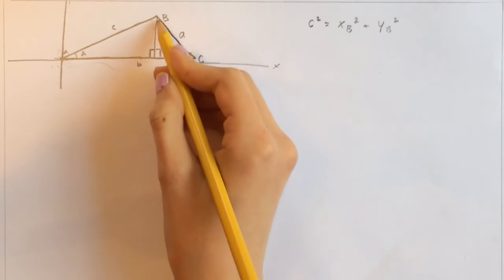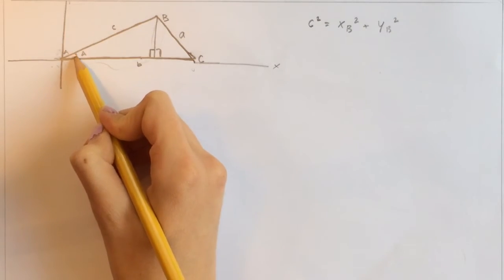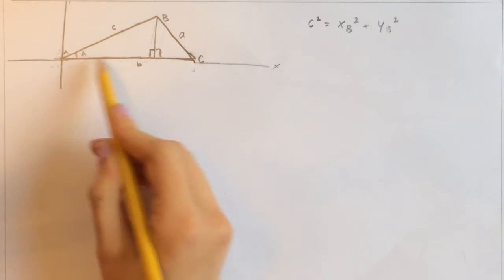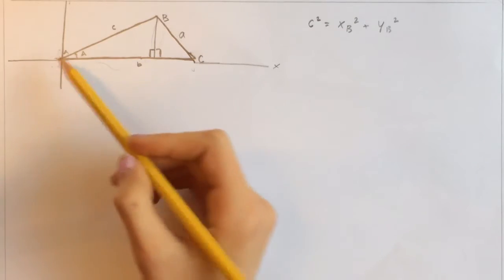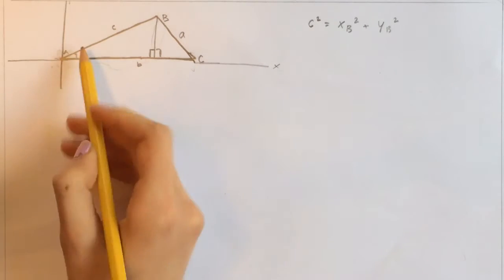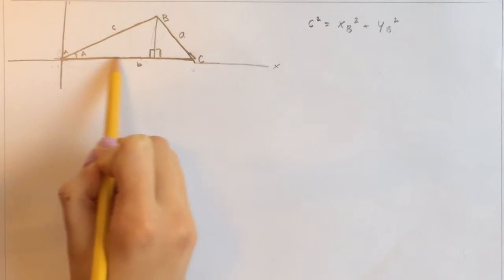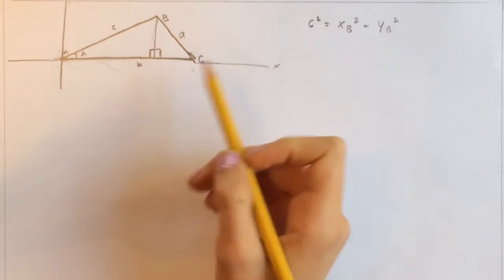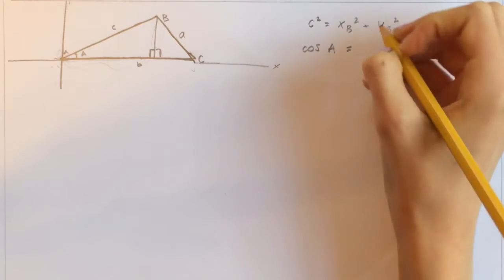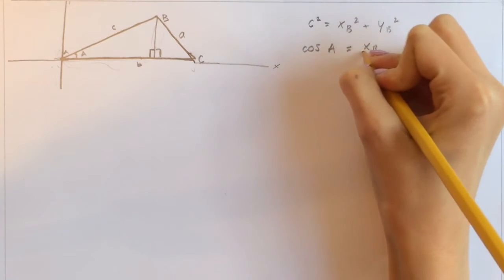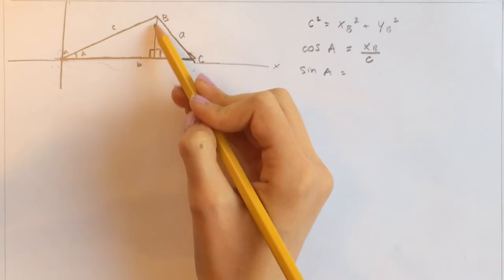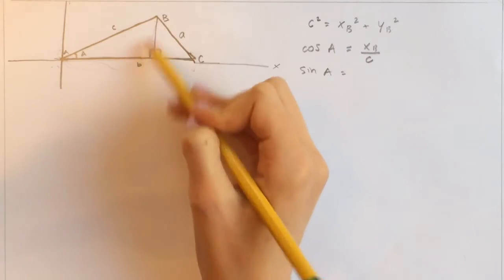Moving on in this triangle, let's look at angle A. We know from SOHCAHTOA that the cosine of an angle is the adjacent over the hypotenuse, and the sine is the opposite over the hypotenuse. So the cosine of A is x of B divided by c, and the sine of A is y of B divided by c.